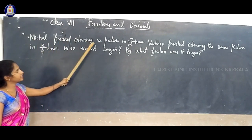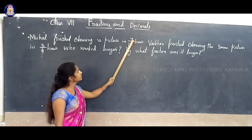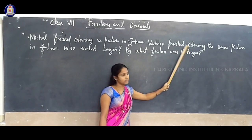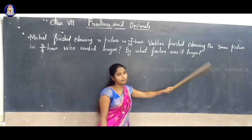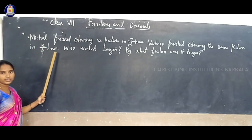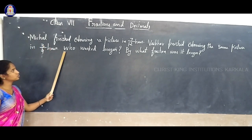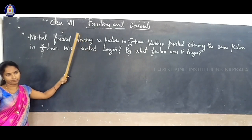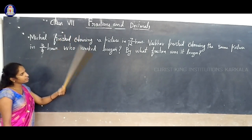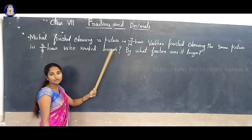Michael finished coloring a picture in 7/12 hour. And Waibo finished the same picture in 3/4 hour. The question is: who worked longer — Michael or Waibo? And by what fraction was it longer? That you have to find.